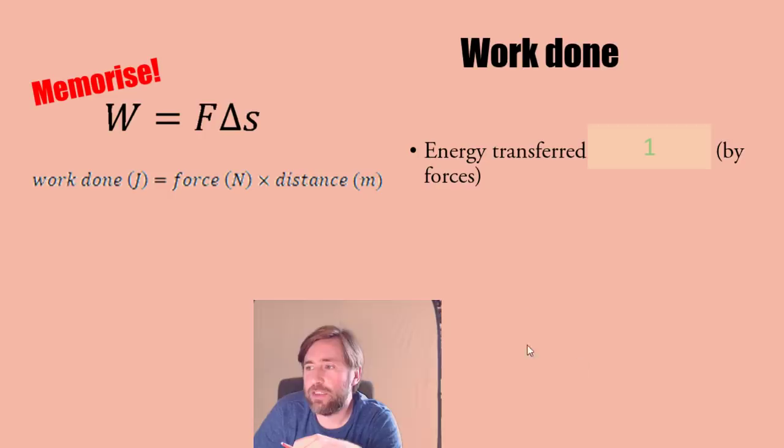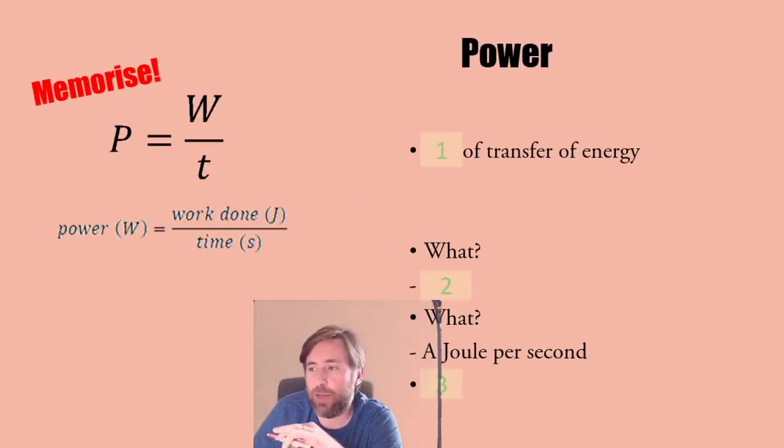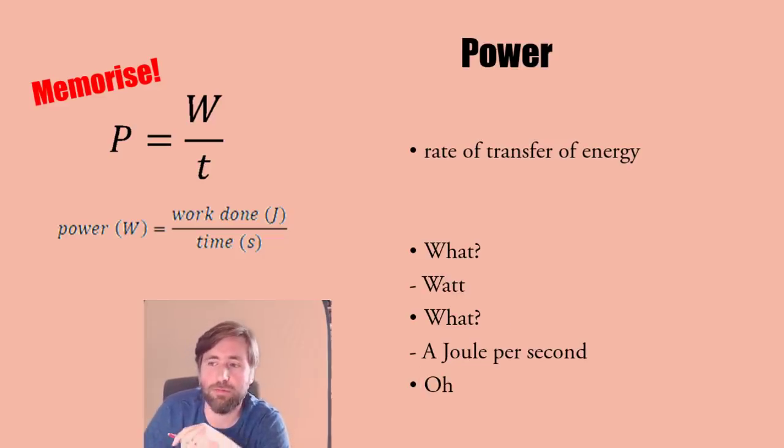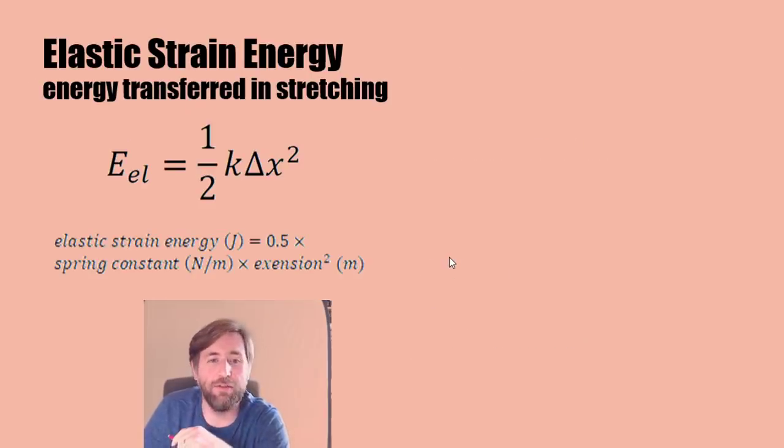Work done is the energy transferred mechanically by forces - force times distance in the line of action of the force. Power is the rate of transfer of energy. What's a joule per second? A watt.